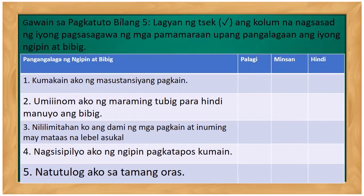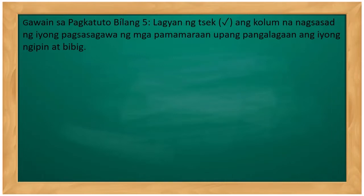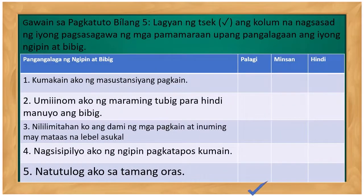Gawain bilang lima: lagyan ng check ang pangungusap na nagsasaad ng iyong pagsasagawa ng pamamaraan ng pangangalaga ng iyong ngipin at bibig. Number one: kumakain ako ng masustansyang pagkain. Number two: umiinom ako ng maraming tubig para hindi manuyo ang bibig. Number three: nalilimitahan ko ang dami ng mga pagkain at inuming may mataas na level ng asukal. Number four: nagsisipilyo ako ng ngipin pagkatapos kumain. Number five: natutulog ako sa tamang oras. Dapat lalagyan ng check ang lahat ng mga pangungusap.